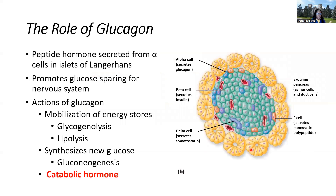Now let's look at the antagonistic hormone: glucagon. Glucagon is secreted by the alpha cells of the islets, whereas insulin comes from the beta cells. Glucagon promotes glucose sparing — especially for the nervous system and brain. It mobilizes energy stores by promoting glycogenolysis, lipolysis, and gluconeogenesis (synthesis of new glucose). It is a catabolic hormone that also blocks the anabolic effects of insulin. When glucagon is elevated, we tap into fat stores in adipose tissue, glycogen in the liver, and all stored biomolecules, liberating them for energy.